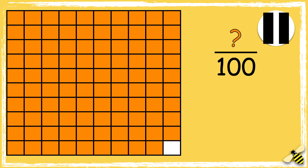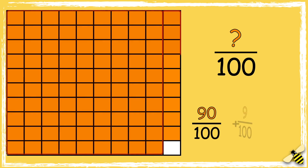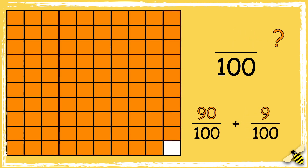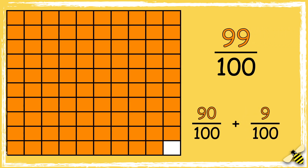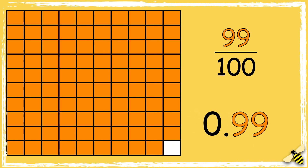Here's one more. What fraction of the grid is shaded? Pause the video to give yourself time to work out the answer. Press play when you're done. So we have ninety and nine, so the grid shows ninety-nine hundredths. As a decimal this is zero point nine nine.